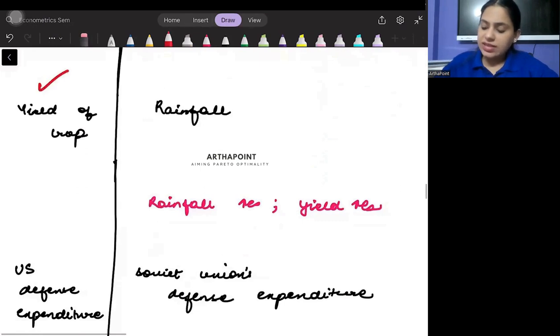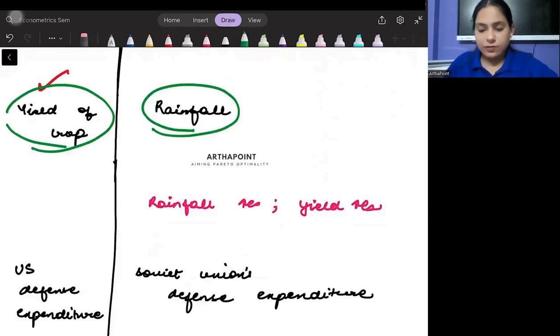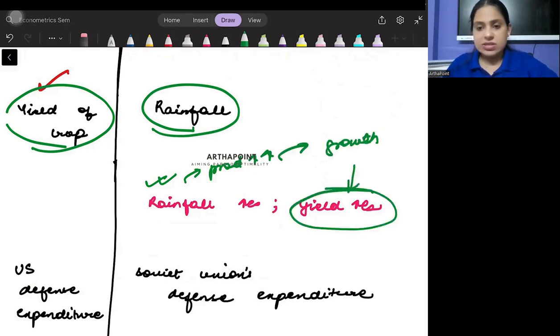Then we have the yield of crop and the rainfall. If there is more rainfall it means that the productivity will increase, the growth will be more for the crops. So the yield will increase.